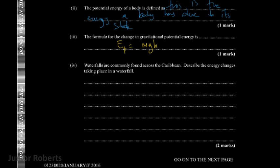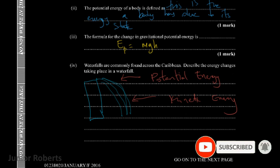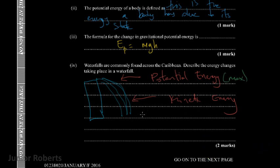This one says waterfalls are commonly found across the Caribbean. Describe the energy changes taking place in a waterfall. If we have a sketch of a waterfall with a cliff, at the top of the cliff we will have maximum potential energy. As the water begins to fall, we will have kinetic energy. At the bottom we will have maximum kinetic energy. So what we have is a transfer or a change of potential energy into kinetic energy.